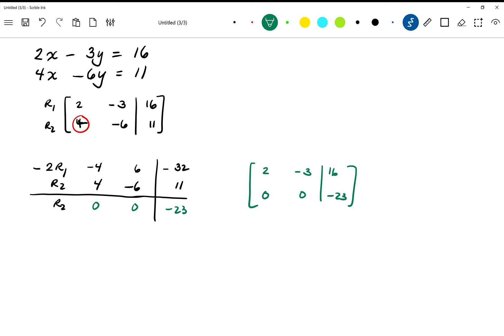So let's just think back to what this means as a regular equation. So if I have 2x minus 3y equals 16, on the second equation or second row, I'm going to have 0x plus 0y, which is just 0, equals negative 23.